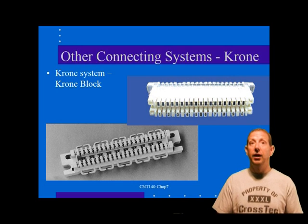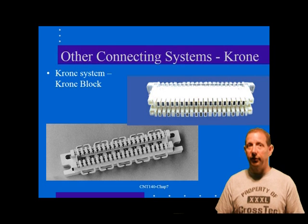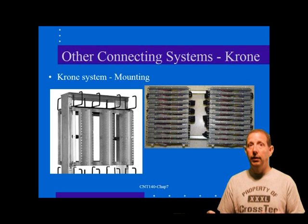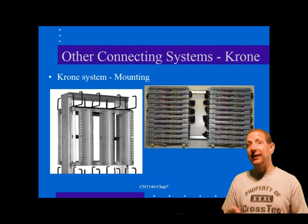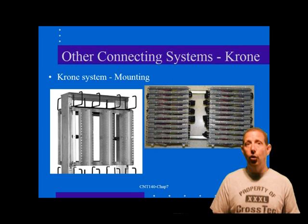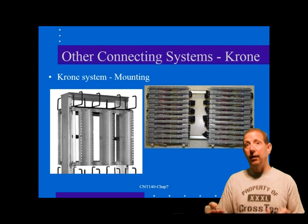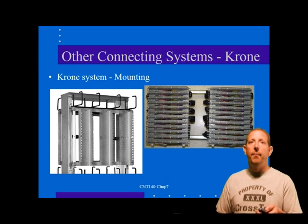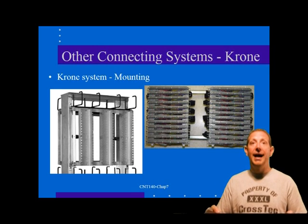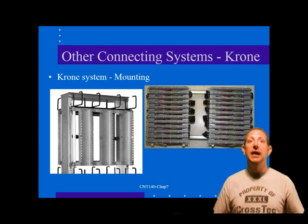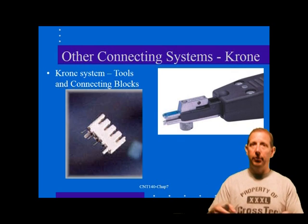Crona assemblies also mount in distribution frames intended for 66 blocks, and the availability of 66 type mounts means versions of the block can be offered with integral 50-pin telco connectors, just as with the 66 blocks. Station and cross-connect wires are terminated on the bottom and top respectively of a Crona connector. The connector offers a unique disconnect contact as an option, and connectors with the disconnect feature can be temporarily opened for isolated testing of either leg of the circuit. Crona connectors may also be found in outlet jacks and patch panels for wire termination, and many manufacturers offer the Crona wire termination system as an option. The connector hardware may be certified to CAT5E and 6, but the usual guidelines for wire pair terminations must be observed.